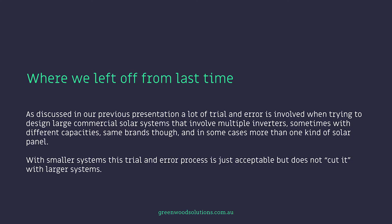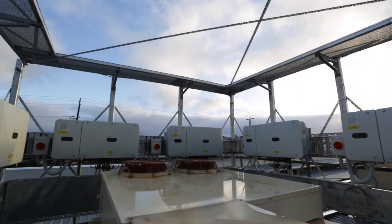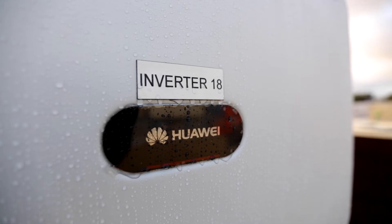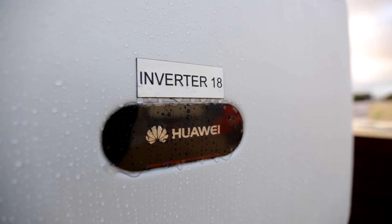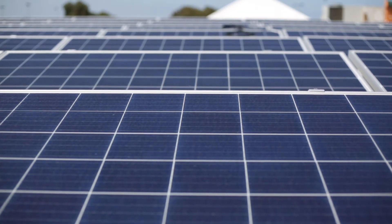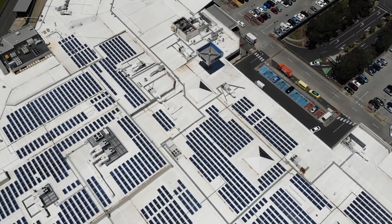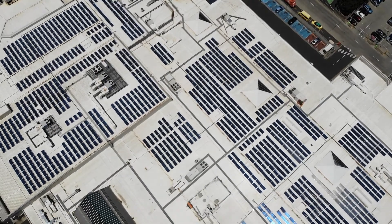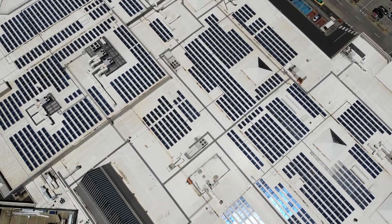Where we left off from last time: as discussed in our previous presentation, a lot of trial and error is involved in trying to design large commercial solar systems that involve multiple inverters, sometimes with different capacities — same brands though — and in some cases more than one kind of solar panel. With smaller systems, this trial and error process is just acceptable, but does not cut it with larger systems.